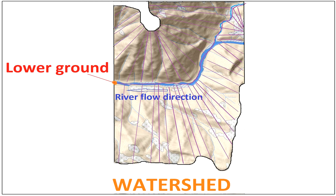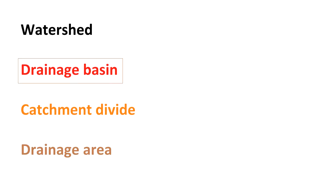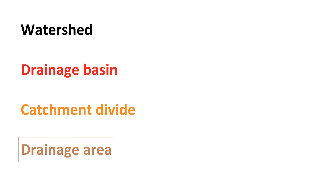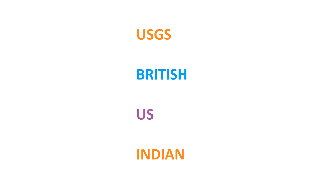We should be clear on the definition of watershed as it has a variety of definitions in different regions. It is sometimes interchangeably used with the words drainage basin, catchment, divide, and drainage area as well. So let's look at what USGS has to say, what British usage says, what US usage says, and how it is explained in India.